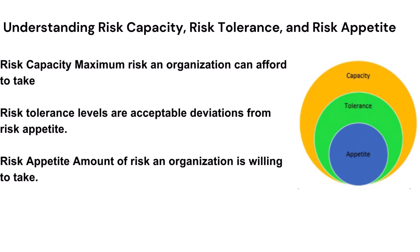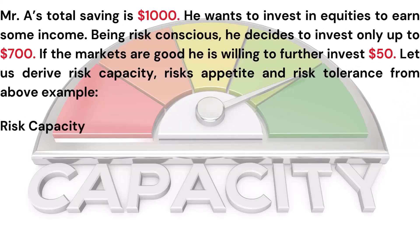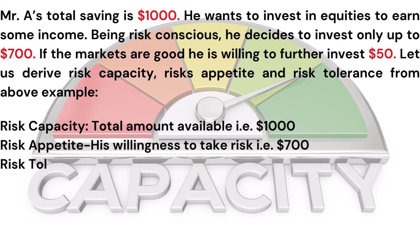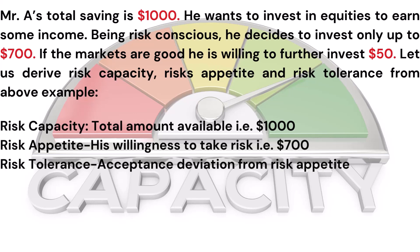Consider this example: Mr. A's total savings are $1,000 and he wants to invest in equities. Being risk conscious, he decides to invest only up to $700. If markets are good, he is willing to invest a further $50. Risk capacity equals total amount available: $1,000. Risk appetite equals his willingness to take risk: $700. Risk tolerance equals acceptable deviation from risk appetite: $50.